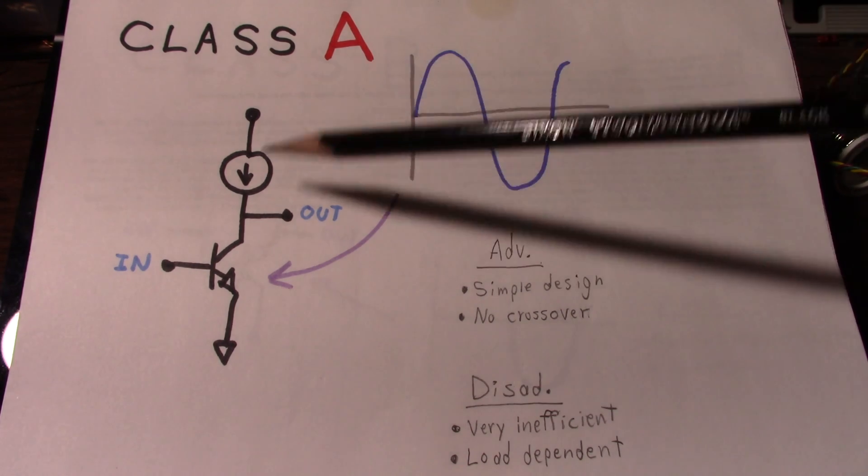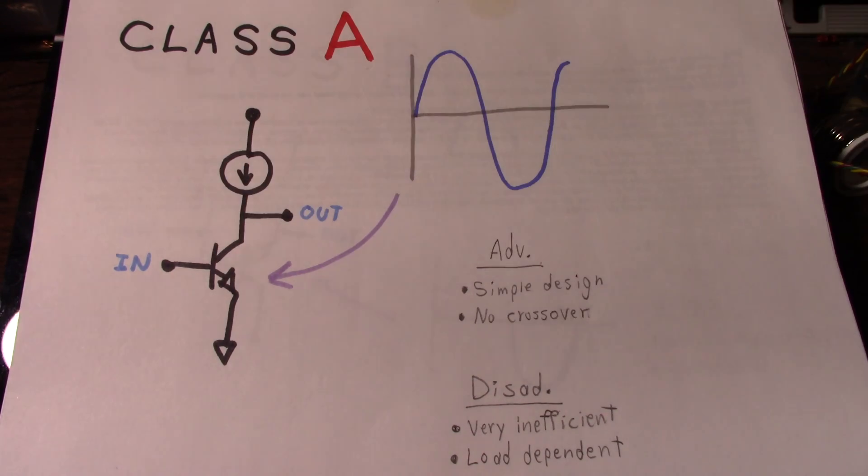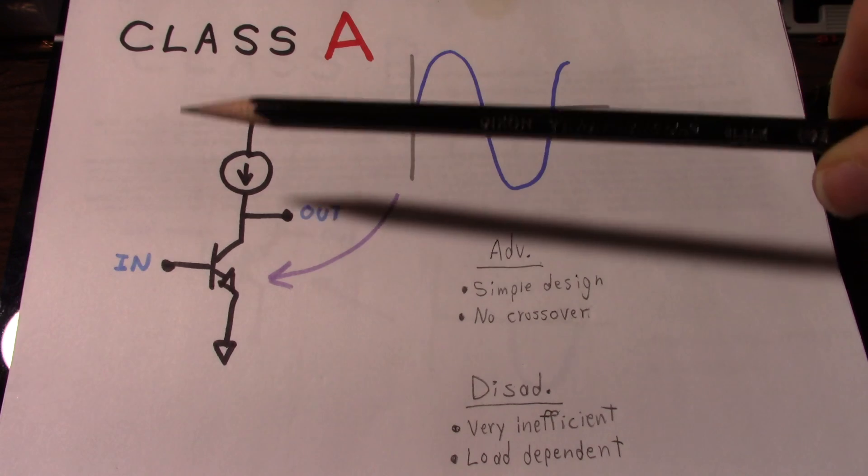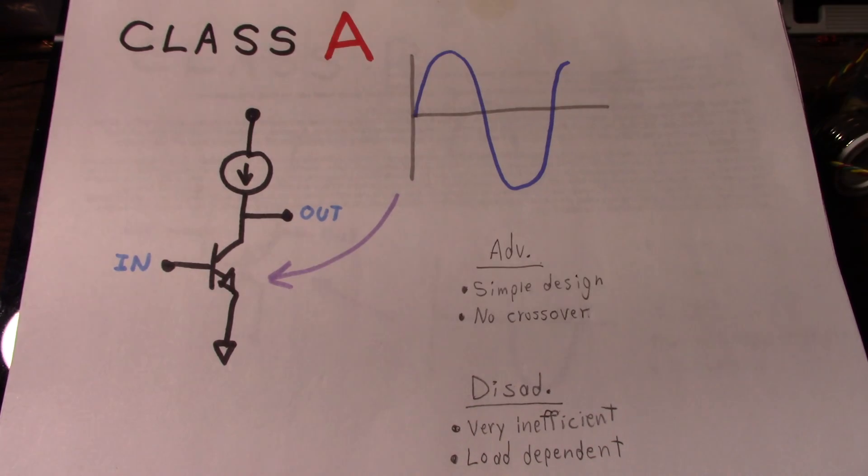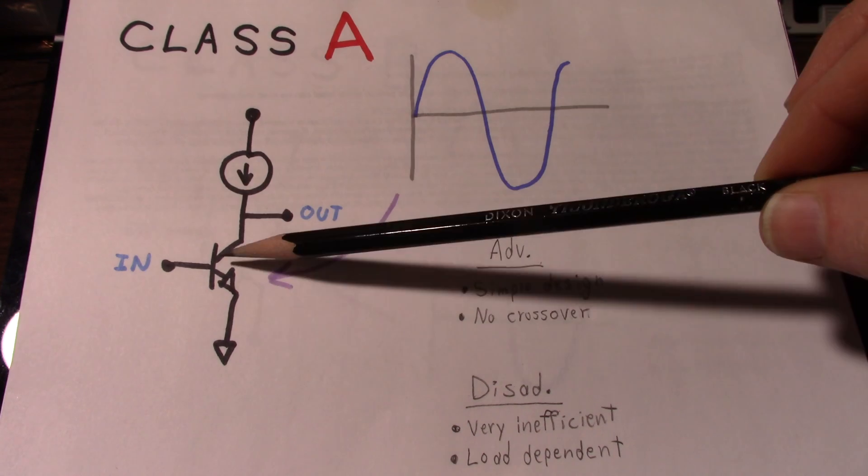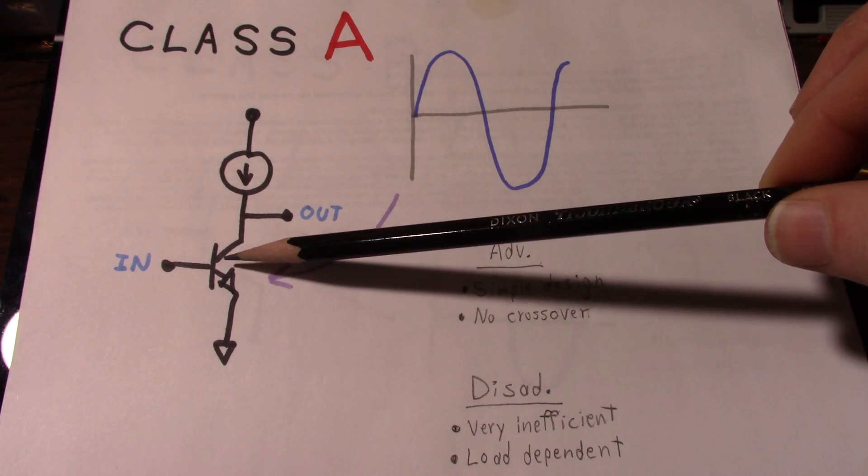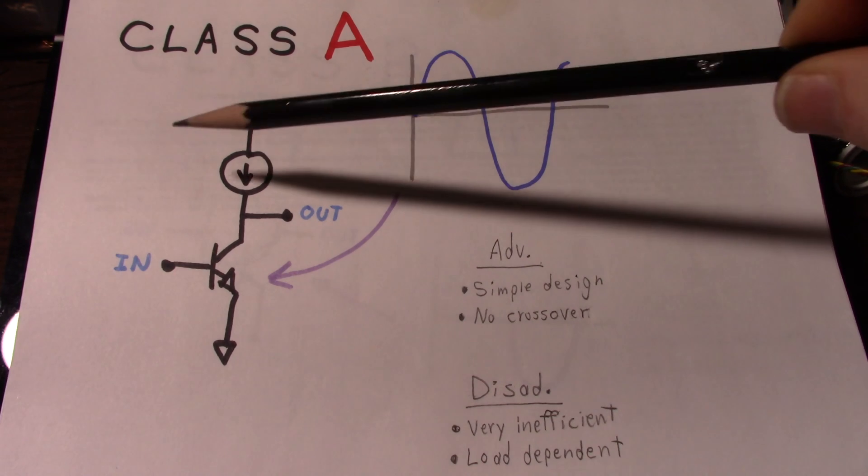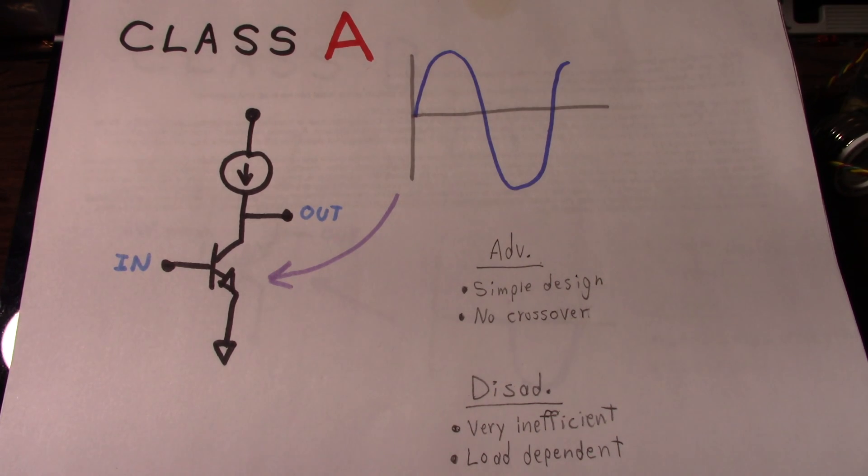Now a class A amplifier could be a push-pull output stage that's biased quite high, so both transistors are handling the full cycle of the waveform. But generally you'll find them set up using some sort of current source and the actual active output device. The current source could be something as simple as a resistor, which would yield a very low efficiency amplifier. It could be an active current source and its associated circuitry, and in some cases they even use inductors.